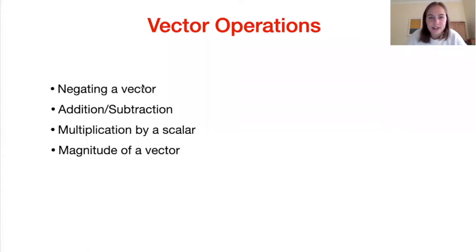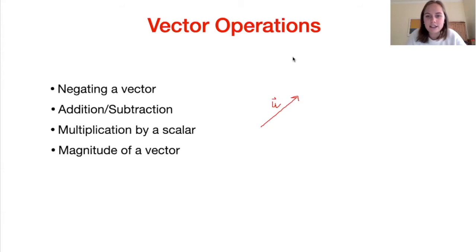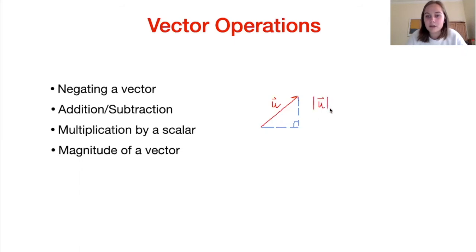Finding the magnitude of a vector: the magnitude essentially translates to the length of that vector. This is easiest to see using triangle trigonometry. We know a vector's horizontal and vertical components, and recognizing this forms a right-angle triangle, we can find the magnitude — denoted by straight brackets — using Pythagoras's theorem. So if u1 is our horizontal component and u2 our vertical component, the magnitude is the square root of u1 squared plus u2 squared.